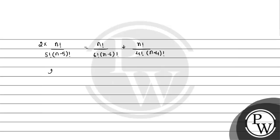Since N factorial is common in the numerator throughout, we cancel it. This gives us 2 upon 5 factorial into (N minus 5) factorial, equal to 1 upon 6 factorial into (N minus 6) factorial, plus 1 upon 4 factorial into (N minus 4) factorial.